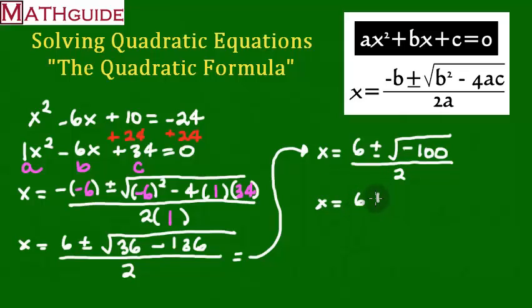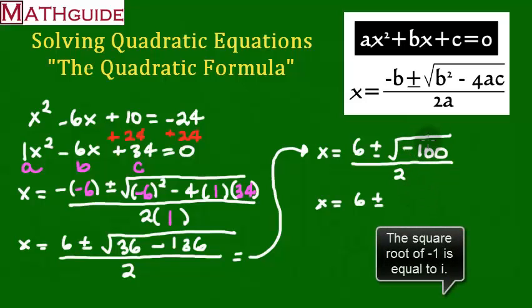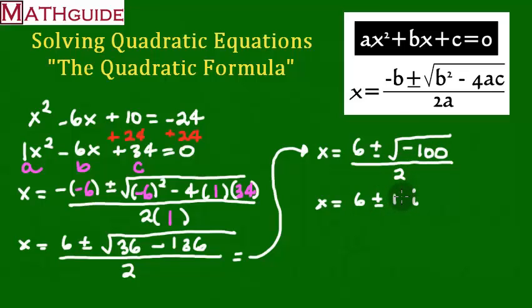And then the denominator is still 2. All right. Well, we're going to take the square root of that minus 100. Again, we're taking a square root of a negative. The negative 1 inside the radical. In other words, just the negative part gives you i. Okay. And then we also know that the square root of 100 is 10. All right. So, a little bit of cleanup with complex numbers. Complex numbers because of the negative.